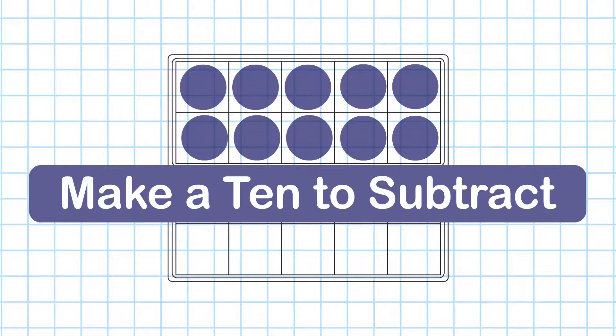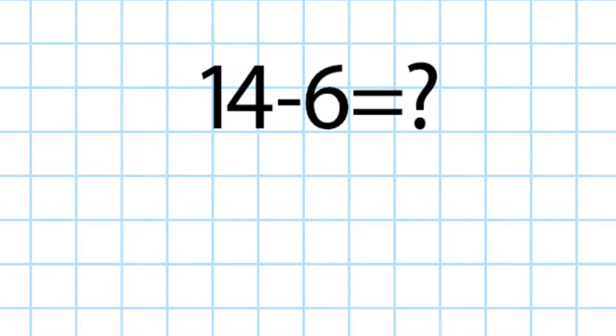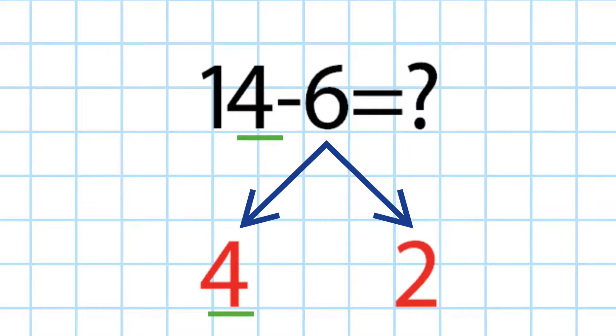Make a 10 to subtract. Let's do 14 minus 6. First, we break down 6 into 4 and 2. This makes it easier to subtract the two numbers.